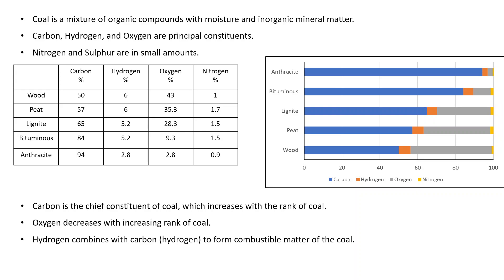Coal is a mixture of organic compounds with moisture and inorganic mineral matter. When we talk about the chemical constituents, carbon, hydrogen and oxygen are principal constituents, while nitrogen and sulfur are present in smaller amounts.